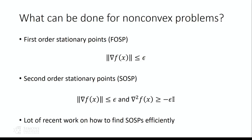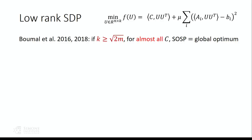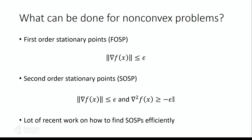In recent work, Bhumal et al. showed that once K is greater than or equal to square root of 2M — matching the existential result — for almost all c (the objective in the SDP), every second order stationary point is actually a global optimum for this optimization problem, for every mu. This statement is for exact second order stationary points where epsilon equals zero. In practice you cannot find exact second order stationary points, so approximate definitions of first and second order stationary points are relevant.